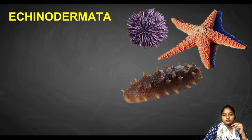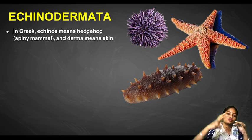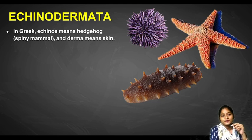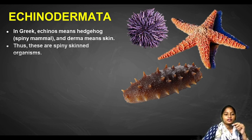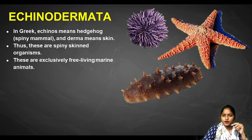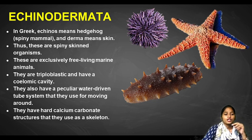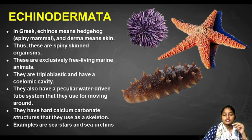Next are Echinodermata. Echinodermata means spiny animals — in Greek, 'echinos' means hedgehog, which has spines, and 'derma' means skin. So these are spiny-skinned organisms. They are exclusively found in marine environments. They are triploblastic with three layers and have a true coelom. They also have a peculiar water-driven tube system used for moving around. They have a hard calcium carbonate structure used as a skeleton. Examples are sea stars and sea urchins.